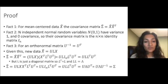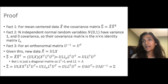To prove this, we need three facts. For mean-centered data, recall that the covariance matrix is simply X times X transpose. Fact 2 says that for n independent normal random variables, we have variance 1 for those variables and covariance 0 between any two variables. So their covariance matrix is actually the n by n identity matrix, I sub n.